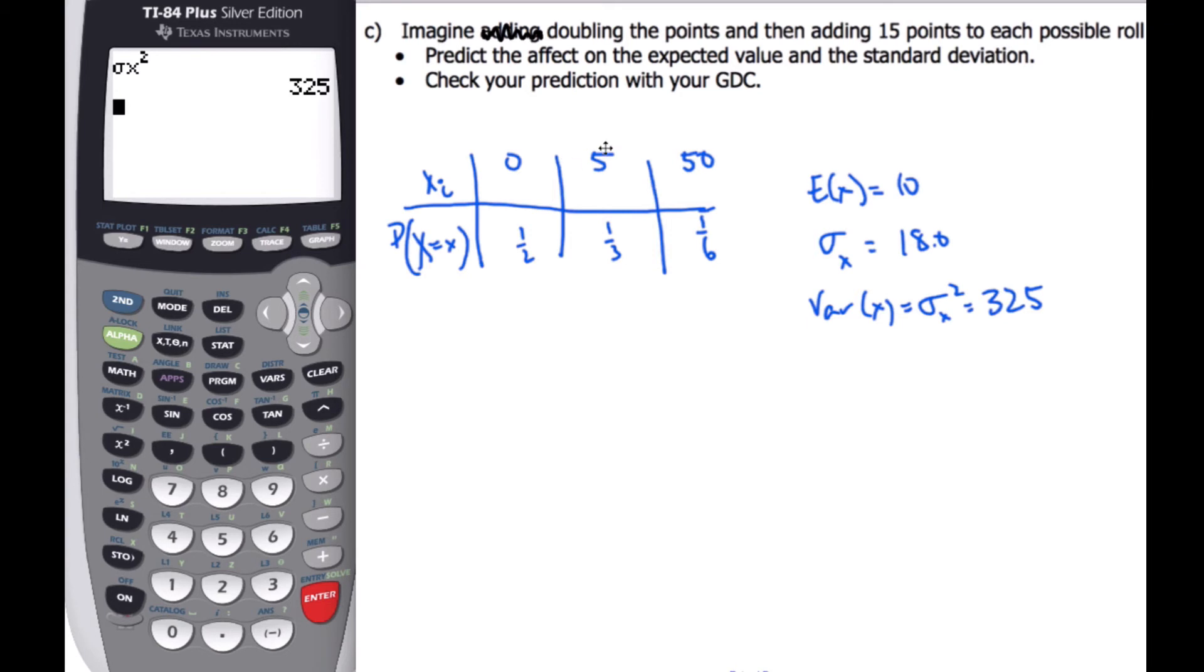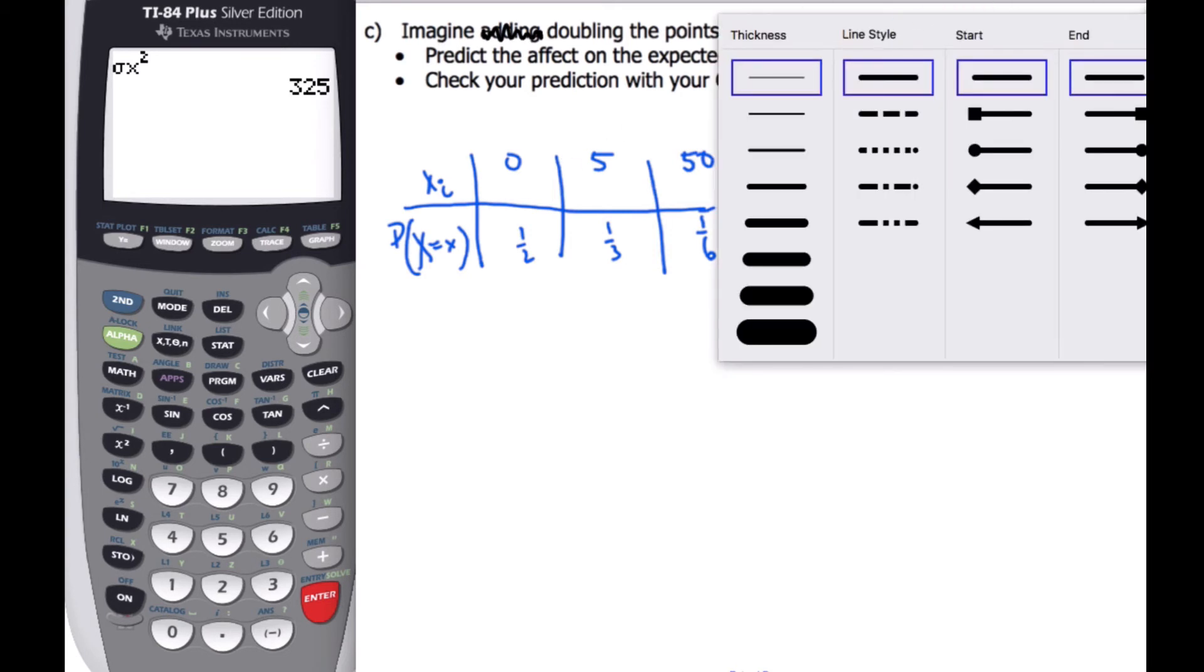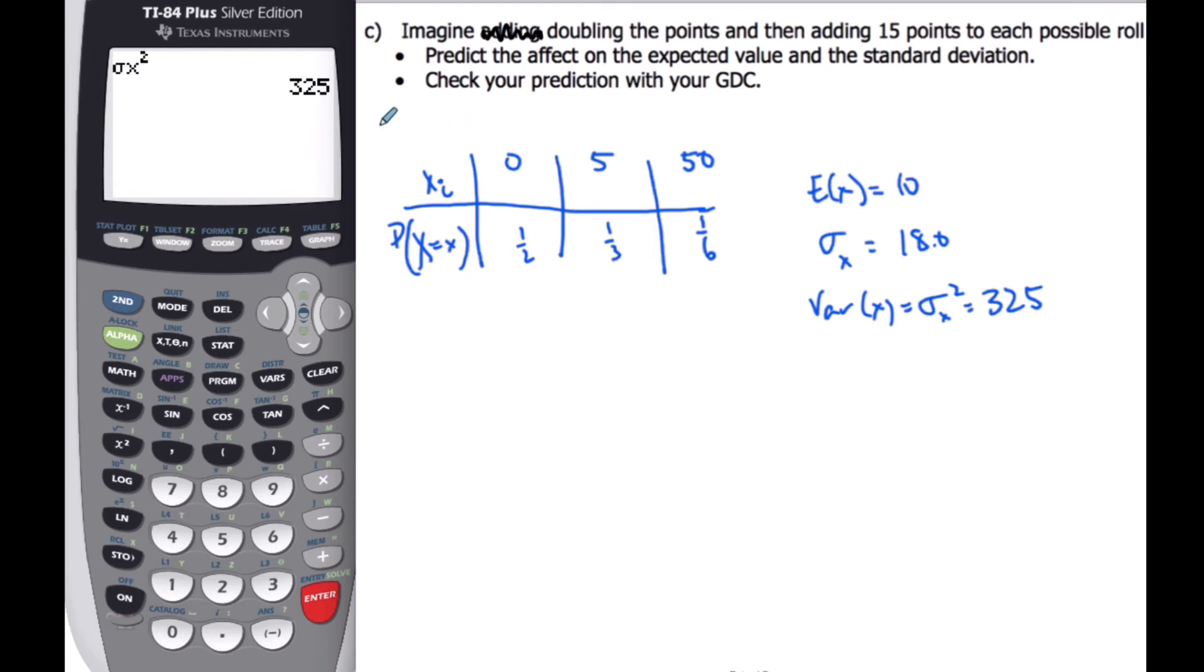So if I'm going to actually do this little experiment here, I'm in essence going to take every x value multiplied by 2, and add 15. So this is 0, 2 times 0, 0 plus 15, will become a point total of 15. This point total will be 2 times 5 is 10, plus 15 is 25, 2 times 50 is 100, plus 15 is 115.